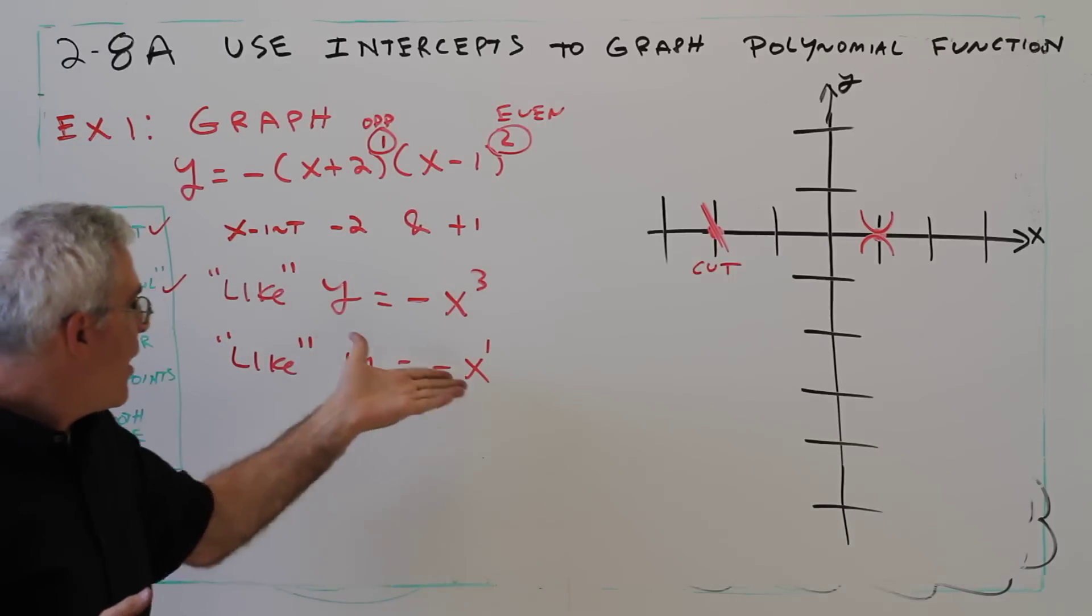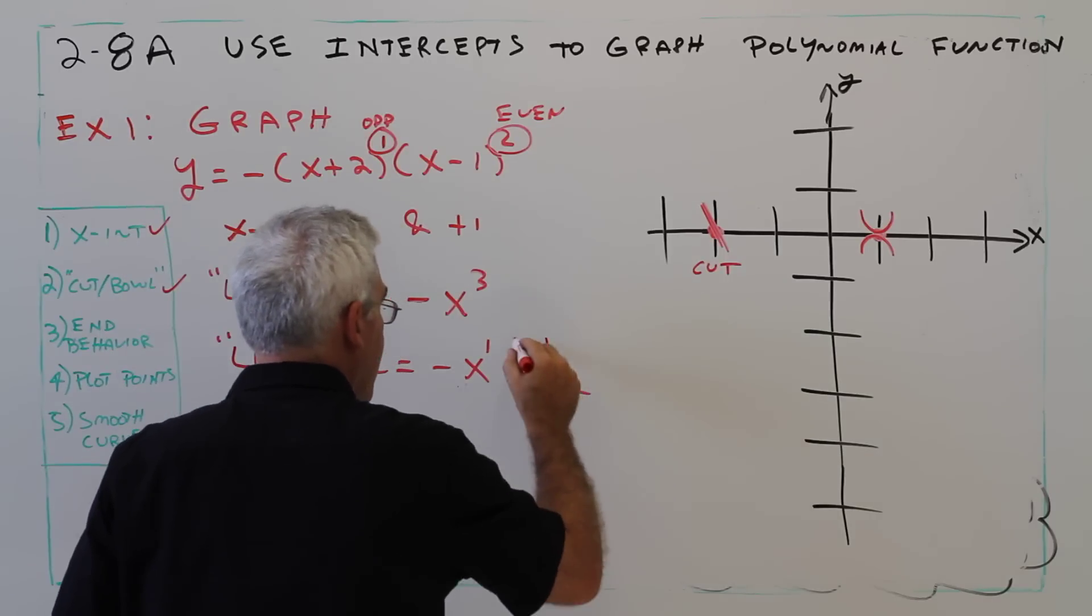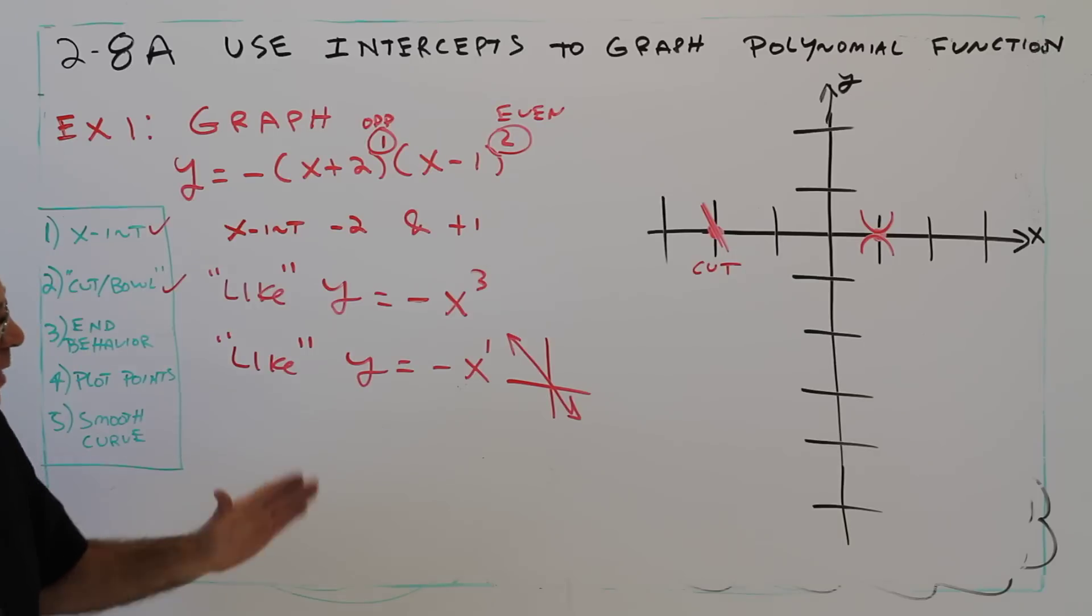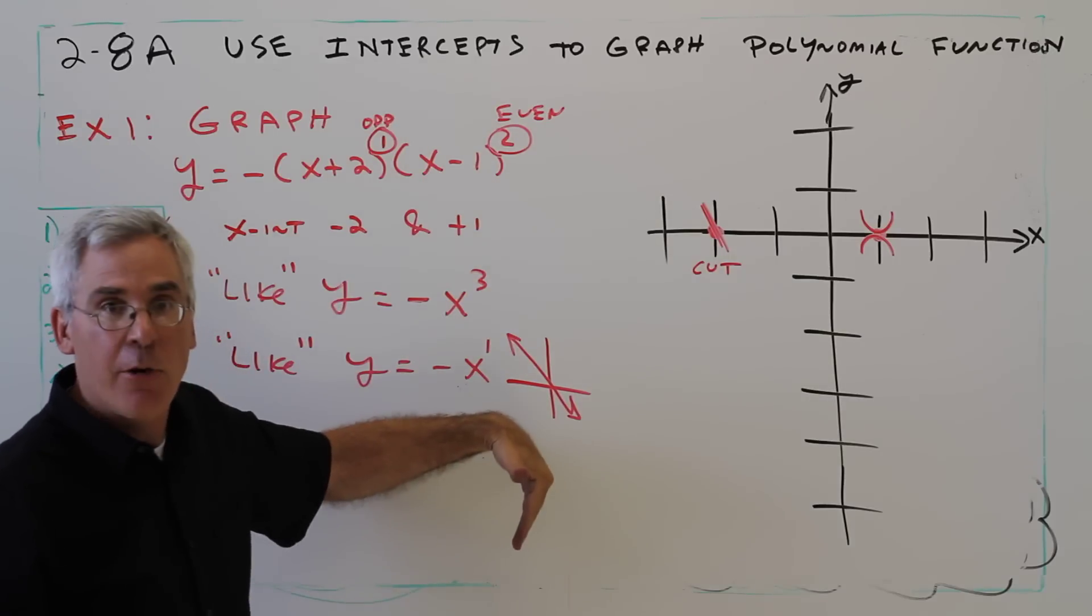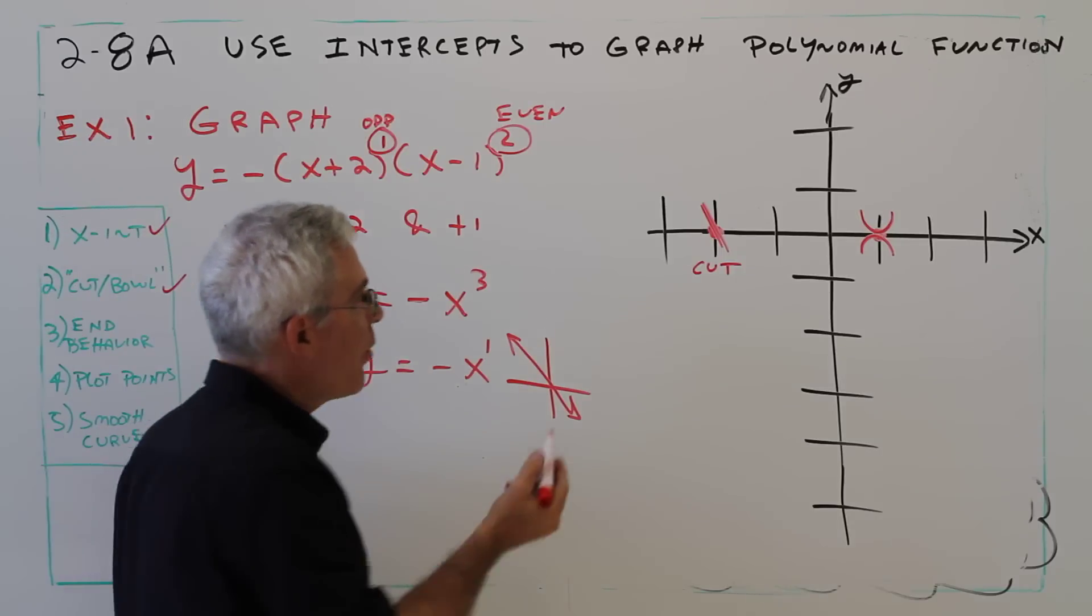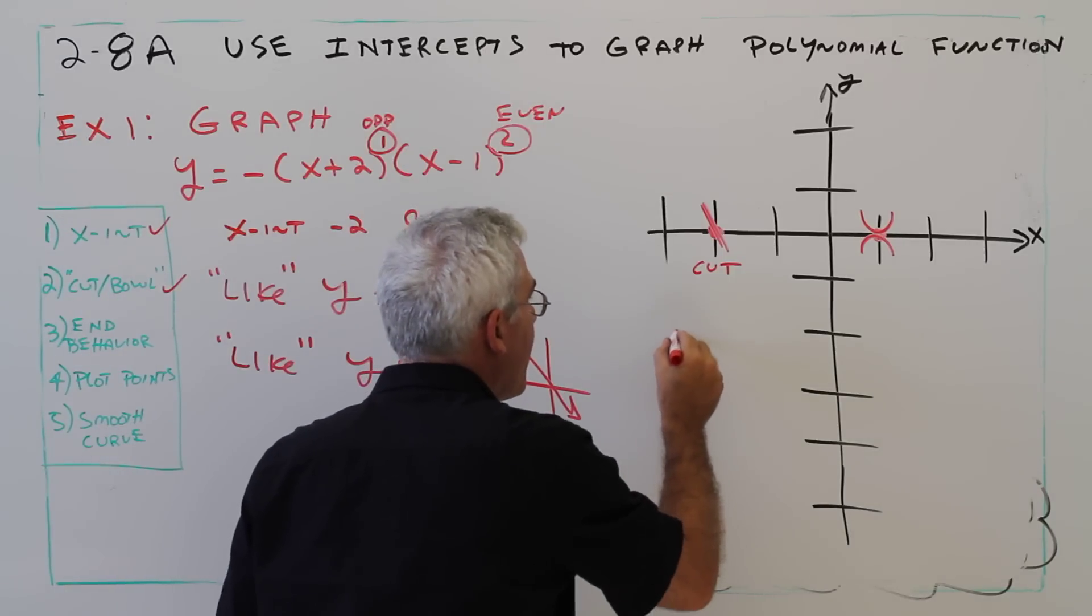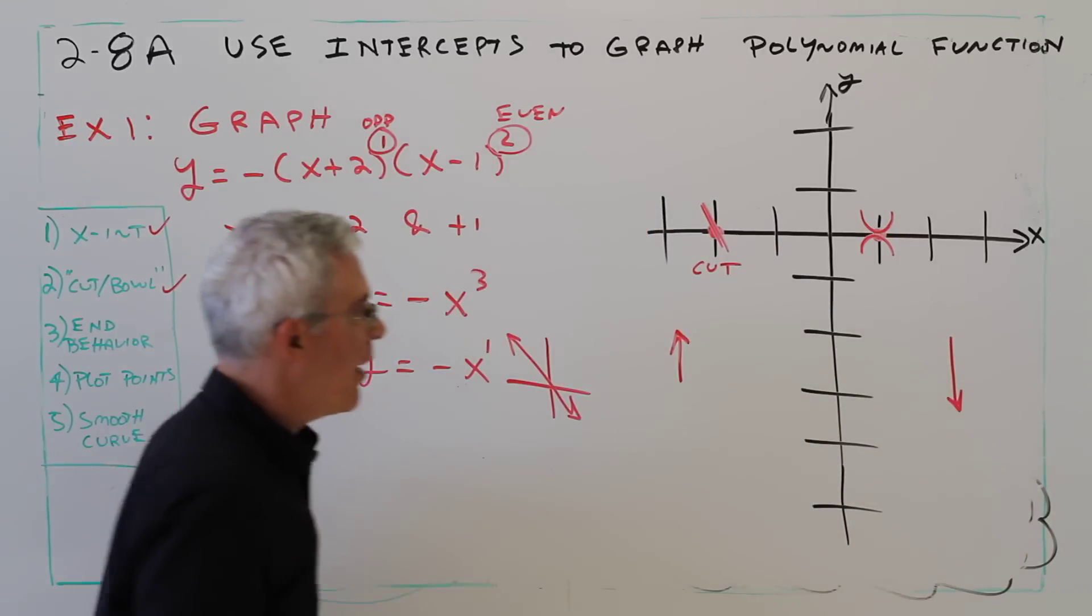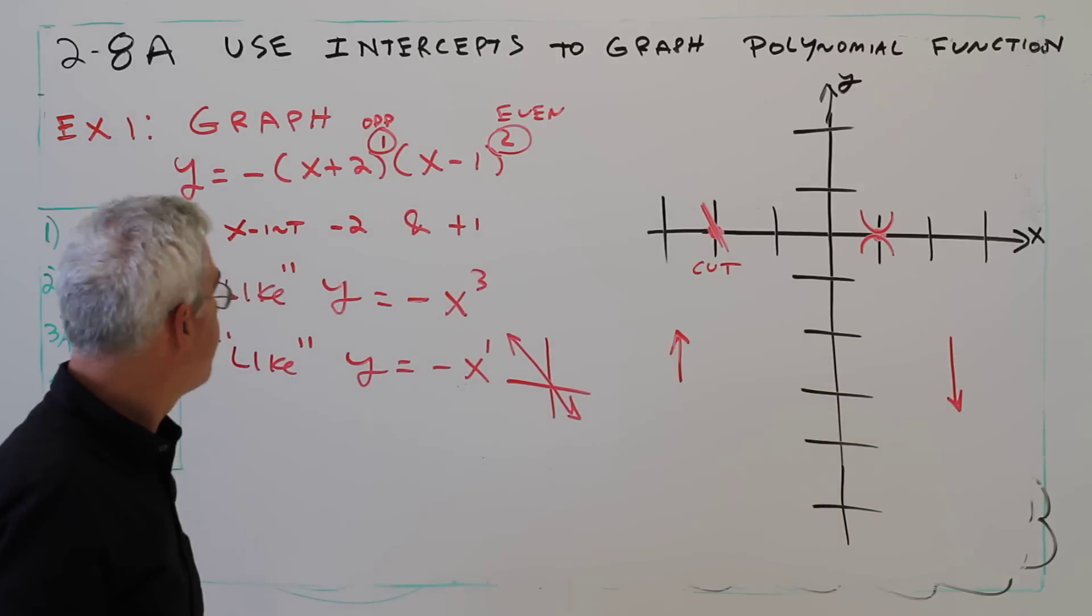I have an idea of what that looks like. So my end behavior is going to be going up on the left side and down on the right side. And what I do is I just physically put that on my graph. So I'm going to be going upwards on the left side and downwards on the right side. I'm a visual person, that just helps me with the graph.